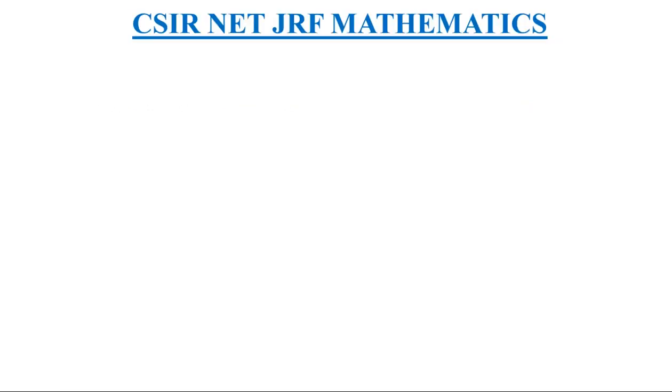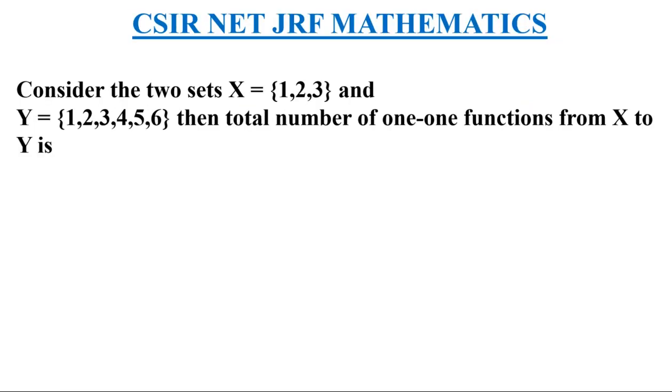Moving on to the question: consider the two sets X = {1, 2, 3} and Y = {1, 2, 3, 4, 5, 6}. Then total number of one-one functions from X to Y is